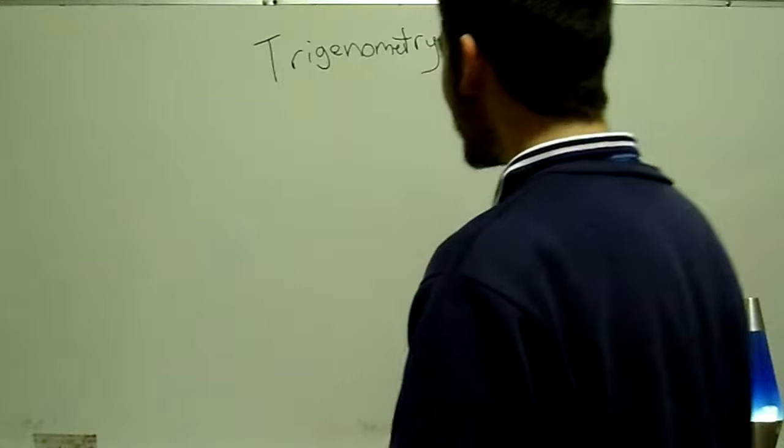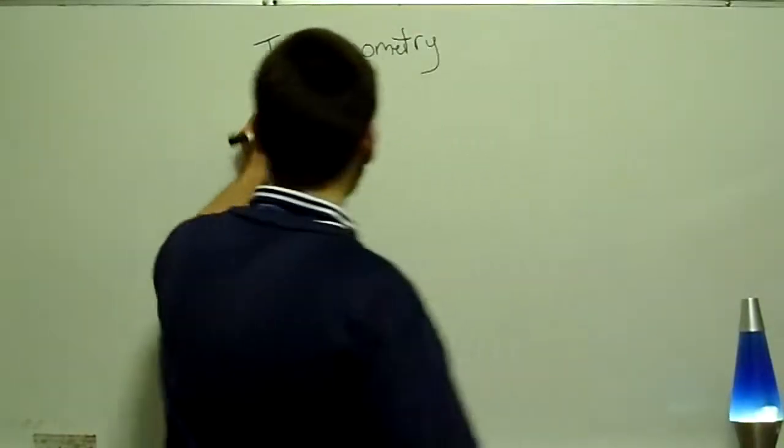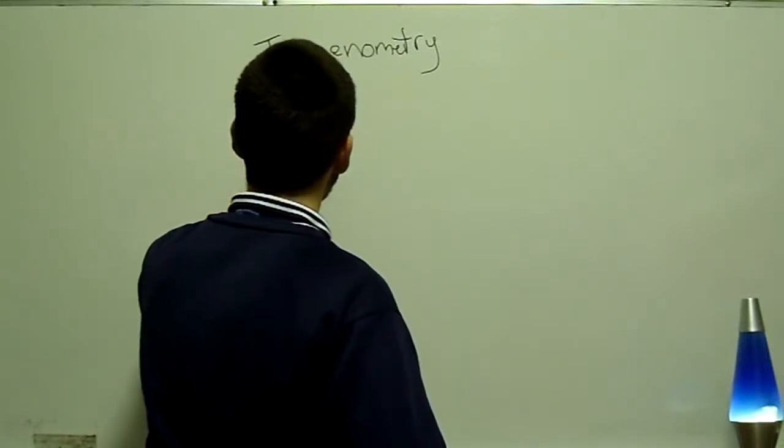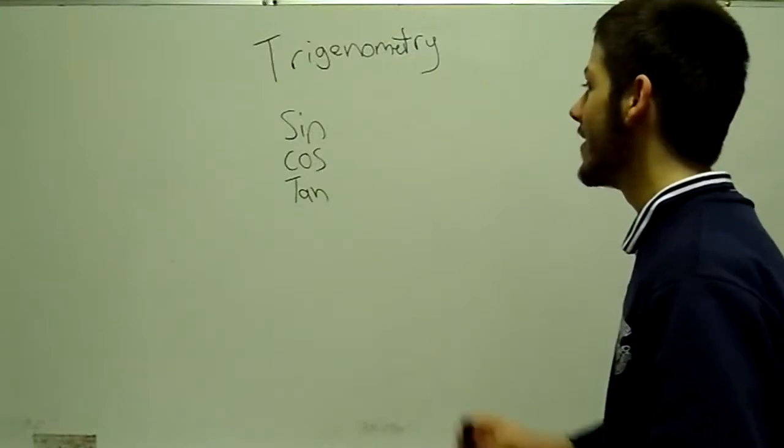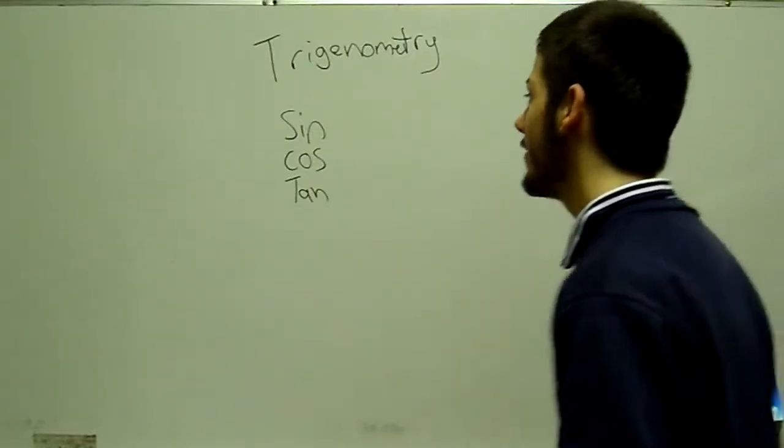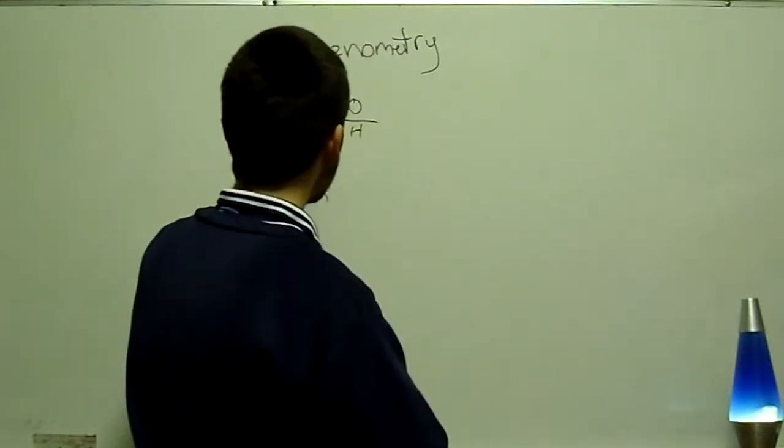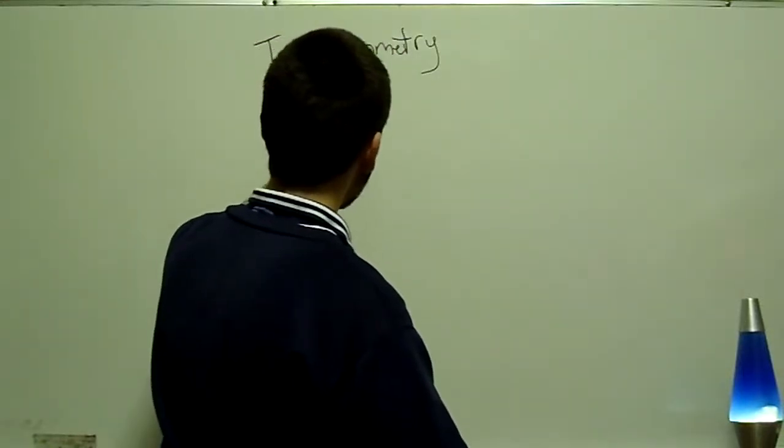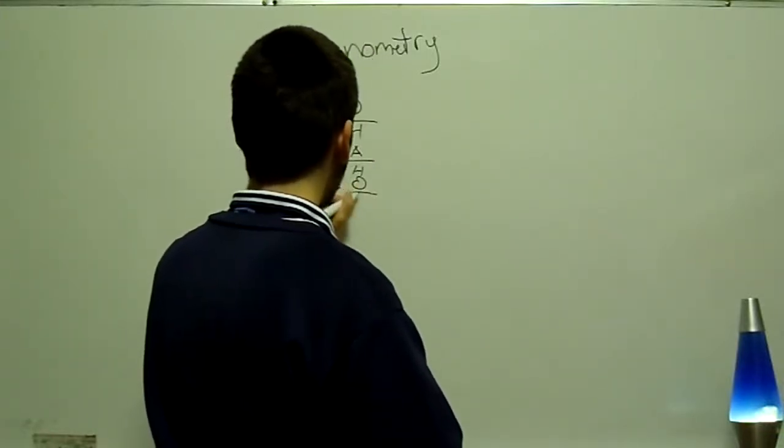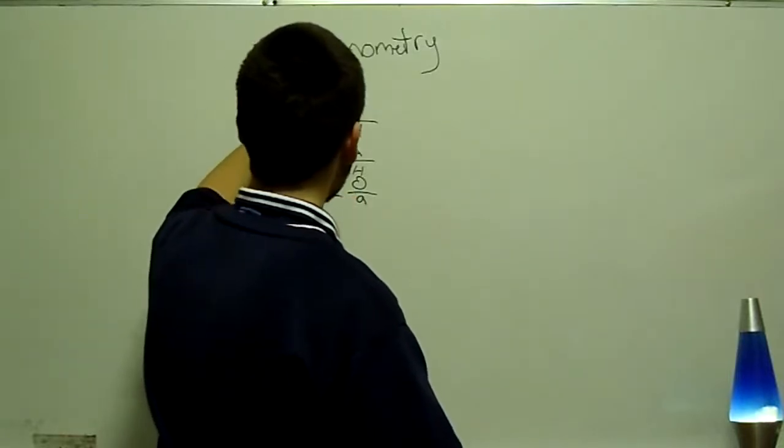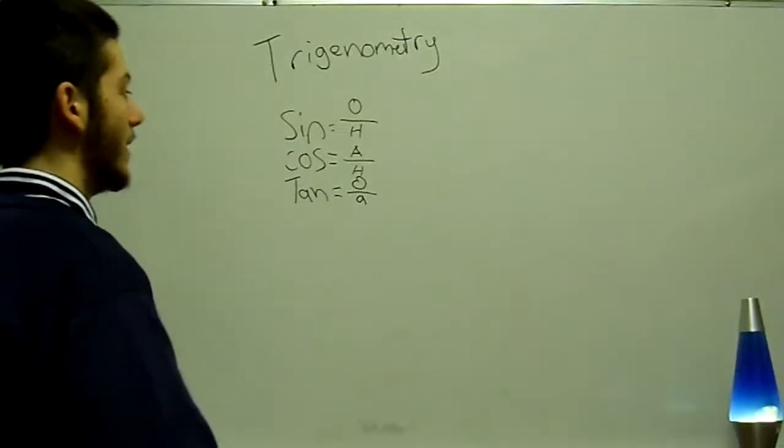So first off, with trigonometry, we've got our three basic rules, which is our sine, cos, and tan. Now you guys all remember the ratios that each of these represent. Sine is very obviously opposite over hypotenuse, cos is adjacent over hypotenuse, and tan is opposite over adjacent. Now keep in mind that there's a theta in between all of these, so it's to the theta of the degree.